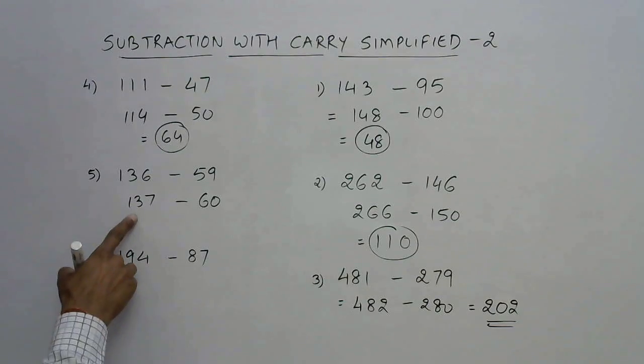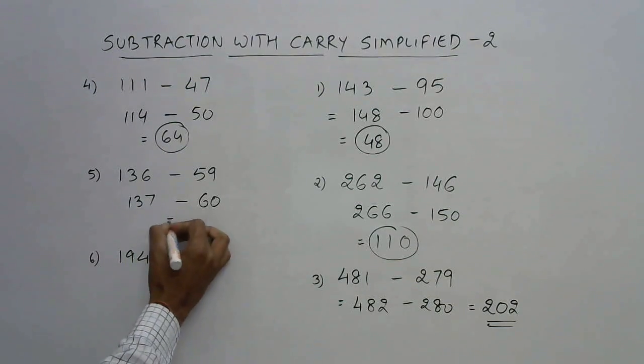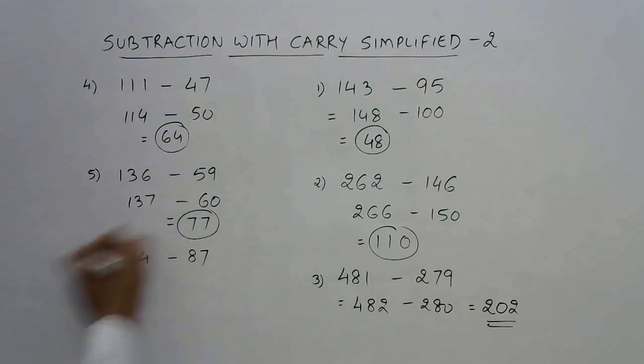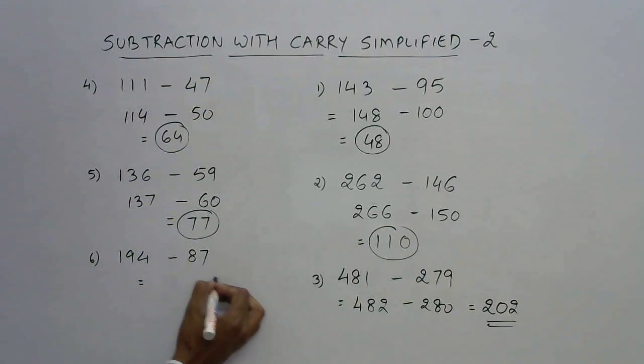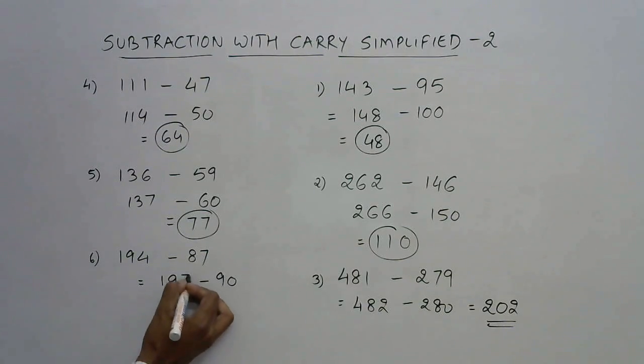Finally we have 194 and 87. This is very close to 90, so I have to increase this by 3, so increase this also by 3. Now 19 minus 9 is 10, and we have a 7 here, so 107 is the answer for this question.